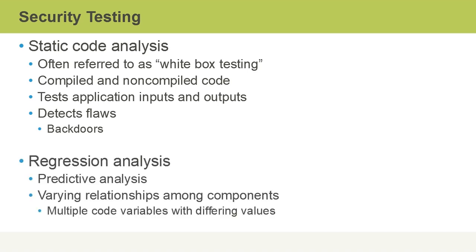A regression analysis can also be conducted. It's also considered to be a predictive analysis where we look at the varying relationships between different application components. Sometimes when you do security testing on one component of an application, it appears to be solid. But when we look at the interaction — when we add more moving parts — we might realize that there is some kind of a security vulnerability. For instance, we might have multiple code variables with differing values when that variable is passed to a different application component.